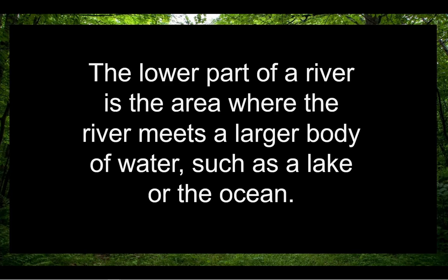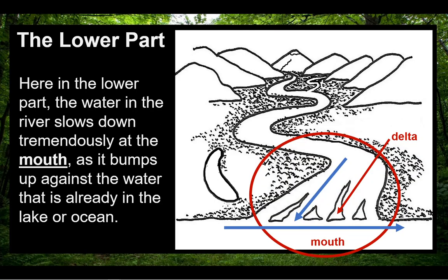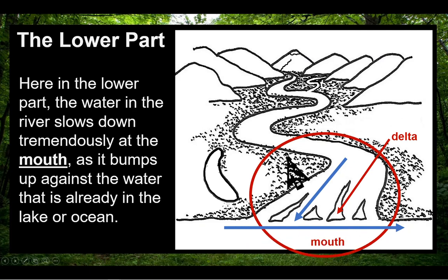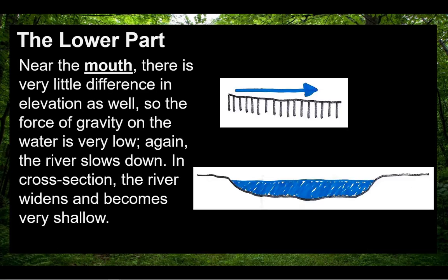The lower part of a river is the area where the river meets a larger body of water, such as a lake or the ocean. Here in the lower part, the water slows down tremendously at the mouth as it bumps up against the water already in the lake or ocean. As shown in this diagram, as the river moves downstream, the river water bumps into the existing water and slows down even further. Near the mouth, there is very little difference in elevation, so the force of gravity on the water is very low, and the river slows down again.